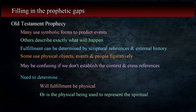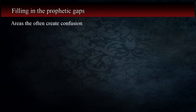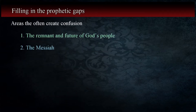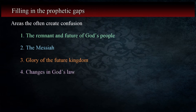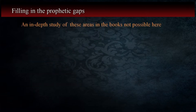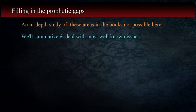The areas that fall into this category are: the remnant and future of God's people, the Messiah, glory of the future kingdom, changes in God's law, and kingship over God's people. An in-depth study of these areas in each of the prophetic books can take a good bit of time. In this lesson, I'll summarize the high points and deal with some of the more well-known issues.